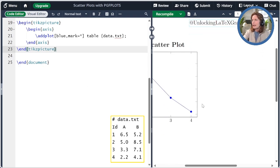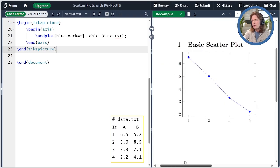By default, we get a line plot. So in order to make this a scatterplot, we have to change things.